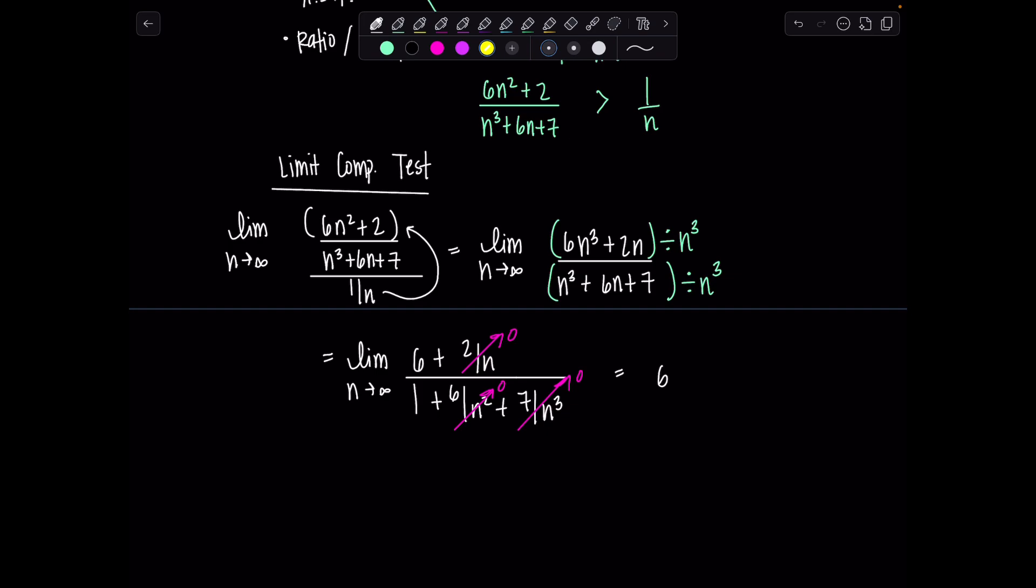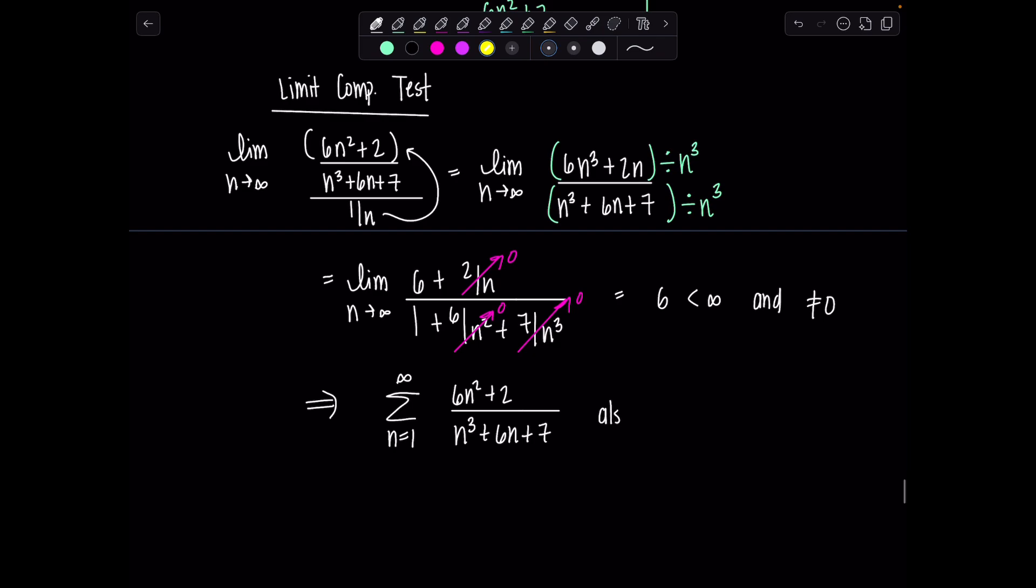Now what do I care about this limit? Not the actual magnitude of it. So not what number it comes out to, just so long as it's finite and not 0. Then what can I conclude? Well, then I conclude that my series behaves the same as the one that I compared it to. So my series was the sum n equals 1 to infinity, 6n squared plus 2 over n cubed plus 6n plus 7. Who did I compare it to? The divergent harmonic series. So then I would say this also diverges by the limit comparison test.